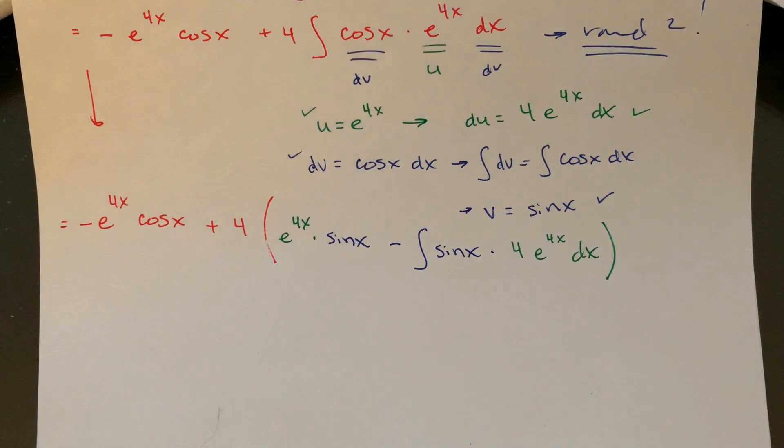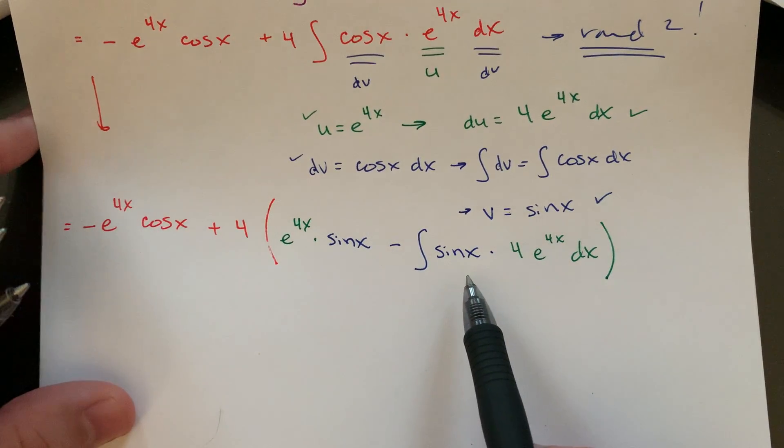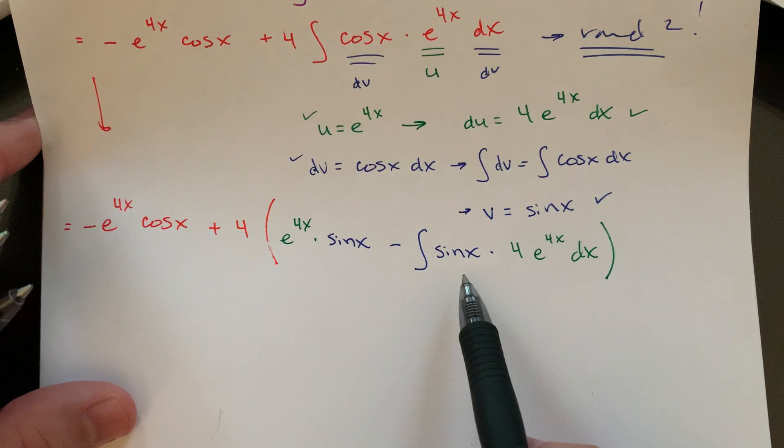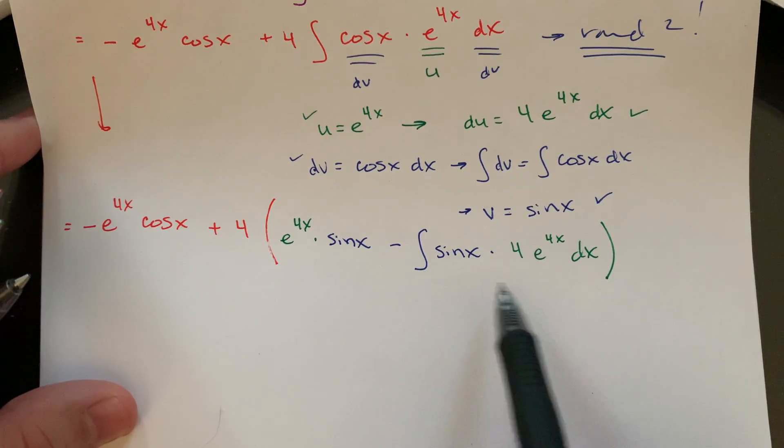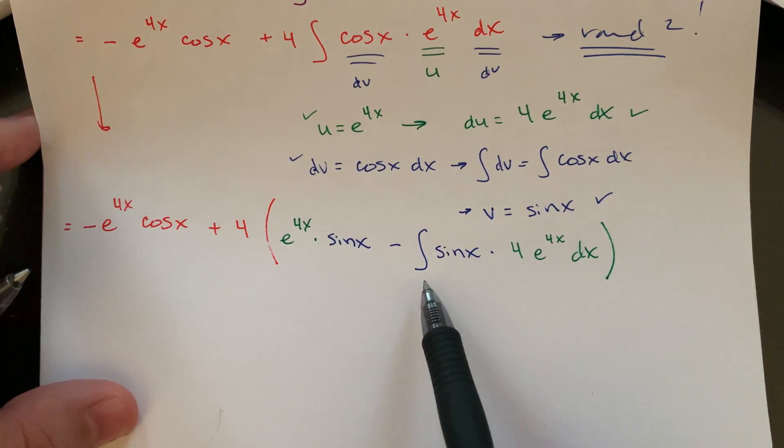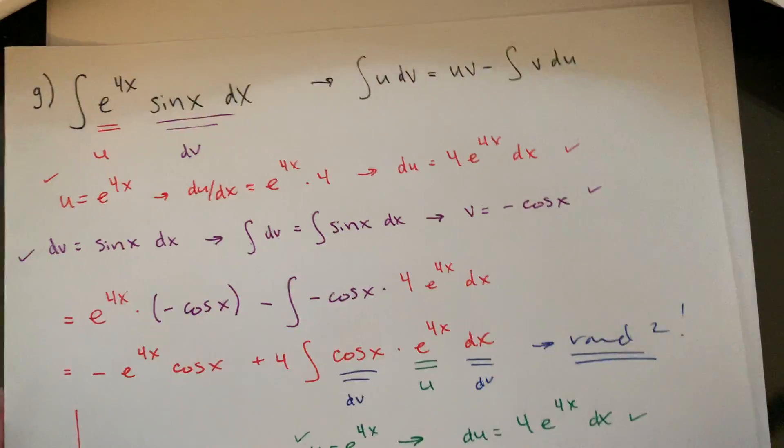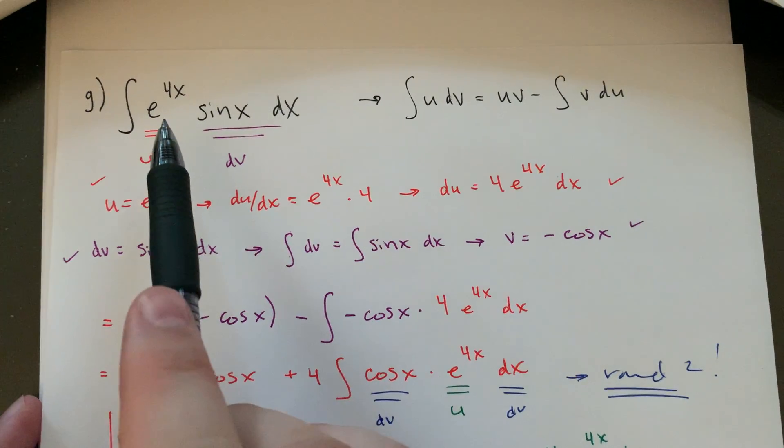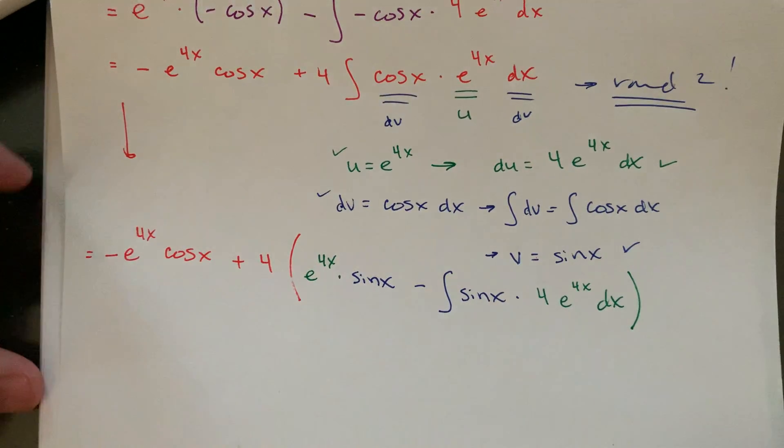So that's my round 2, u times v minus integral v du. Let's take a minute and clean it up. And because I'm sneaky and I know what to expect, what's happening here with these sort of infinite loops is you kind of end up with something that's the same kind of format as where you started. So in this case, by the time we get to the second round, we're back at this sort of integral of sine of x times 4 e to the 4x. That's rearranged a little bit, but that's very similar to what we had here with the 4 and everything's just rearranged.